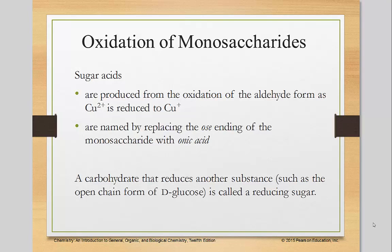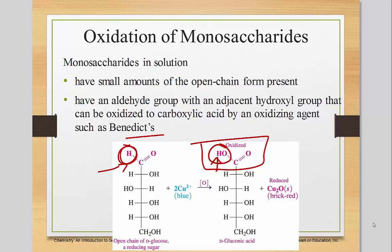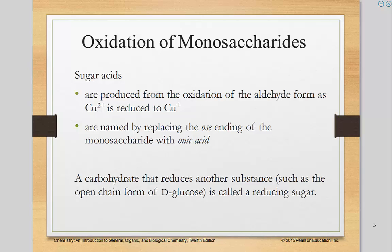These are then producing sugar acids. There's an OH group here, and that hydrogen can easily be removed, which makes it an acid. By definition, an acid is something that donates hydrogen. If they end up removing this hydrogen, then that hydrogen can be donated, thus making it an acid. And that gives it the ending of "onic acid."